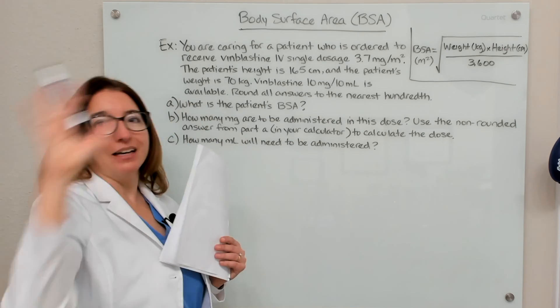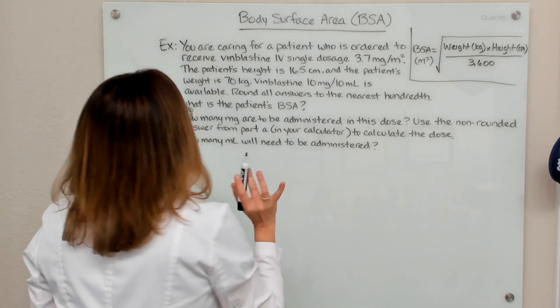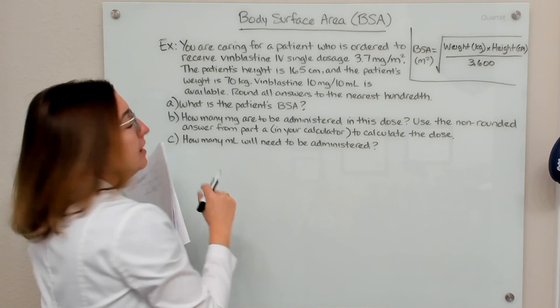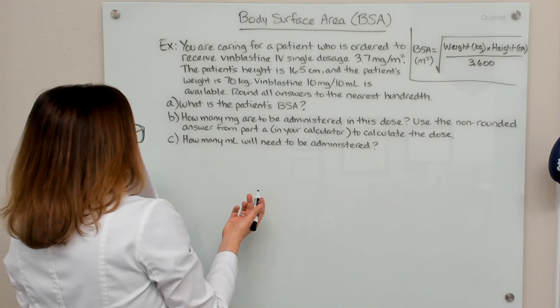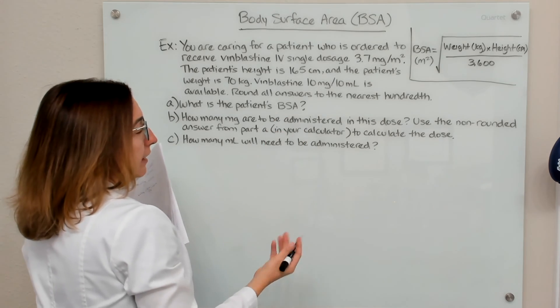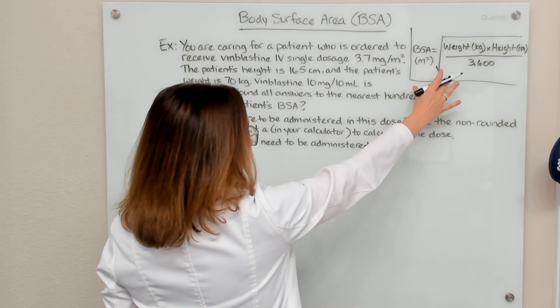Okay, so get out your calculator and let's work through the parts of the problem. Okay, so for part A, we're being asked, what is the patient's BSA, or body surface area. And we're going to use this equation over here.